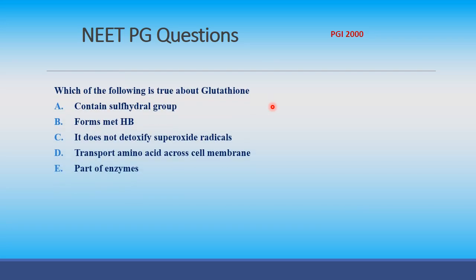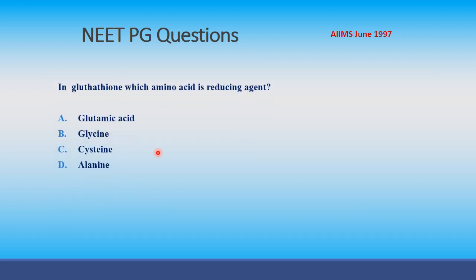PG question (PGI 2000): Which of the following are true about glutathione? Options: contains sulfhydryl group, forms methionine/hemoglobin, does not detoxify superoxide radical, transports amino acids across cell membrane, is a part of an enzyme. The answers are A, D, and E — contains sulfhydryl group, transports amino acids across cell membrane, and is a part of an enzyme.